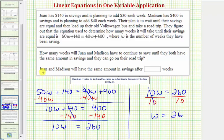Which means Juan and Madison will have the same amount in savings after 26 weeks. I hope you found this helpful.